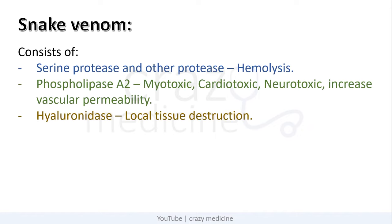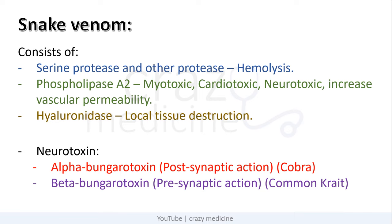Now let me turn to snake venom. It consists of serine protease and other proteases which usually cause hemolysis. It contains phospholipase A2 which is responsible for myotoxicity, cardiotoxicity, neurotoxicity, and it also increases vascular permeability. Next is hyaluronidase which causes local tissue destruction. There are two types of neurotoxin: alpha-bungarotoxin and beta-bungarotoxin. Alpha-bungarotoxin is present in cobra snake and its action is post-synaptic inhibition. Beta-bungarotoxin is present in common krait and its action is pre-synaptic inhibition. The importance of post and pre-synaptic inhibition we will see in the management part.